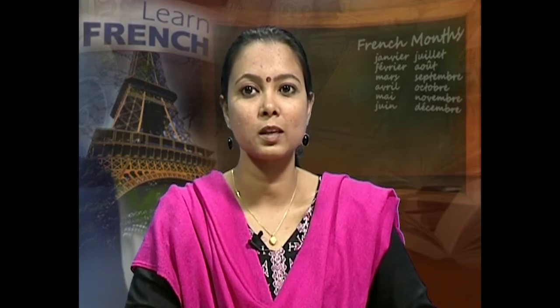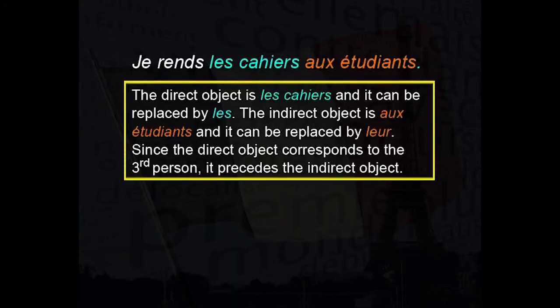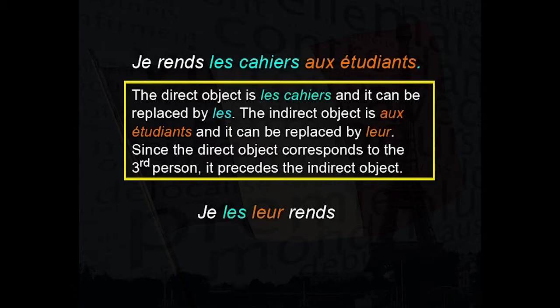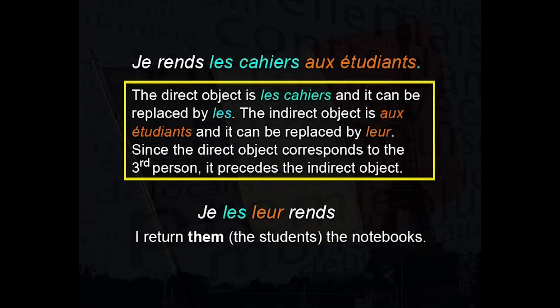In this third section, we will revise what we learnt on sentences with two object pronouns. Je rends les cahiers aux étudiants. The direct object les cahiers is replaced by les, and the indirect object aux étudiants is replaced by leur. Since the direct object corresponds to the third person, it precedes the indirect object. Hence, the answer is je les leur rends — I return them, the notebooks, to the students.